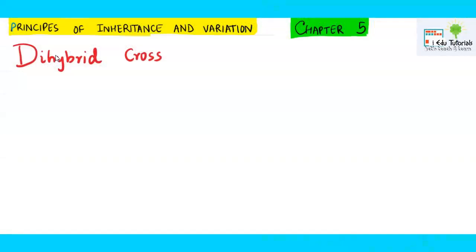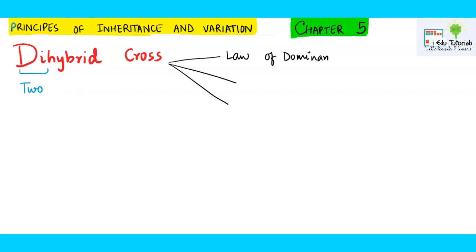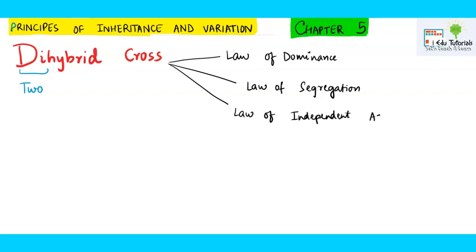In this video we will study the dihybrid cross. 'Di' always means two and 'hybrid' means crossing together, so we will be taking two characters in this cross. Three Mendelian laws are applicable in the dihybrid cross: the law of dominance, the law of segregation, and the law of independent assortment. These laws are known as Mendel's laws, and all three are applicable in the dihybrid cross.